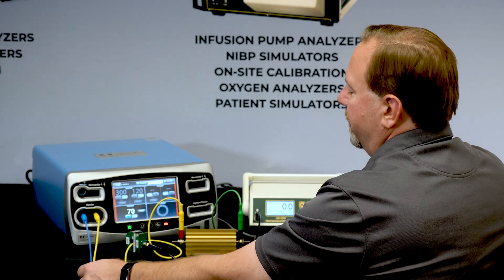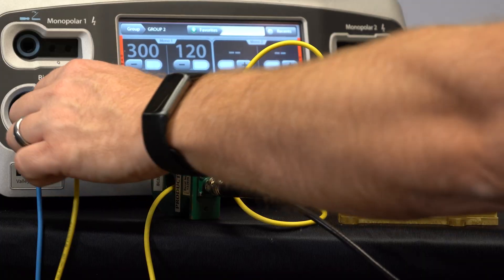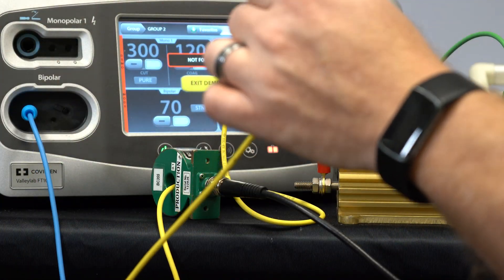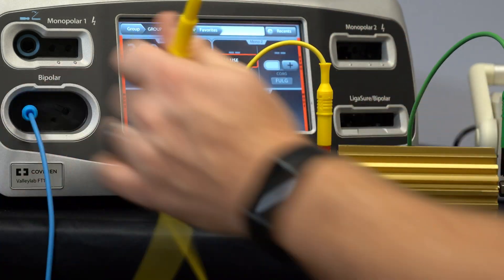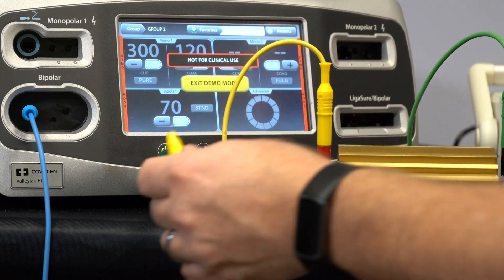The same can be done for a ligature. Again we would use our single active electrode through the current transformer to earth ground and take our measurement for a ligature or monopolar two.